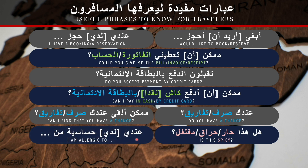'I am allergic to...' — in Arabic we say 'I have an allergy to.' In Modern Standard Arabic: لدي حساسية من — and then name the item. In today's spoken dialects: عندي حساسية من — and name it.